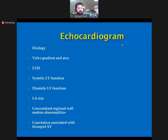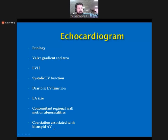When there is ambiguity between clinical presentation and echo, we may need CT scan, MRI, or cardiac catheterization. But these are rarely needed, as echo can usually lead us to our diagnosis. Echocardiogram tells us the etiology, valve area and gradient, degree of left ventricular hypertrophy, systolic and diastolic function, LA size, regional wall motion abnormalities from ischemia, and any associated diseases — especially with bicuspid aortic valve — as well as evidence of aortopathy.